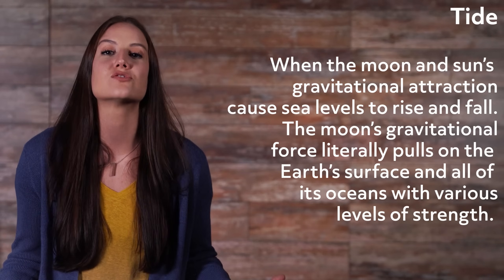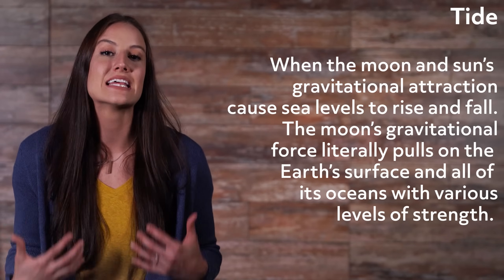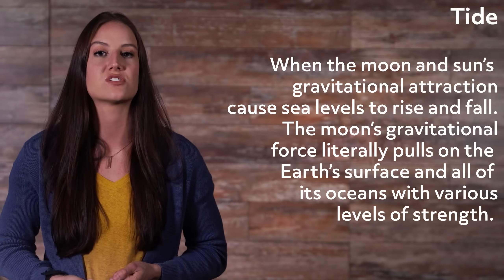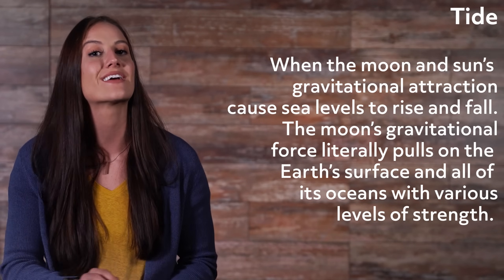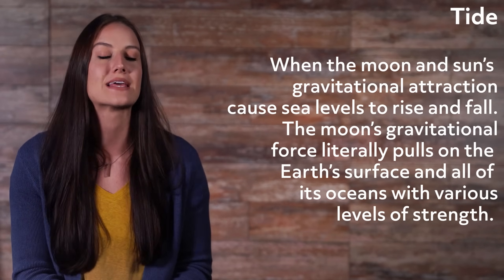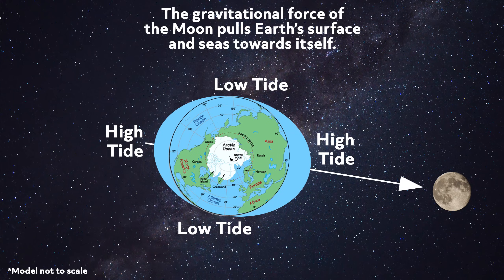The moon's gravitational force literally works to pull the Earth's surface and all its oceans with various levels of strength. What you see happening in this image is the moon attracting the Earth and everything on it to itself. The Earth hangs on to everything, but it can't hang on to the water because the water is in constant movement, so the moon is able to grab it, if you will.